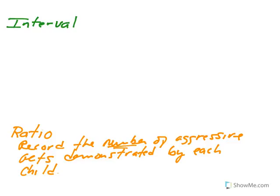If we collect the data for each child, this enables us to calculate the mean of each condition. The mean equals sigma — the sum of x — over our sample size. For each condition, we can calculate the mean once we've generated ratio-scale data for each child. For example, let's say participant B's x value — the number of aggressive acts demonstrated — is equal to five, and the average for the non-violent video game condition was equal to seven. We can use this ratio data to convert it into an interval scale of measurement.